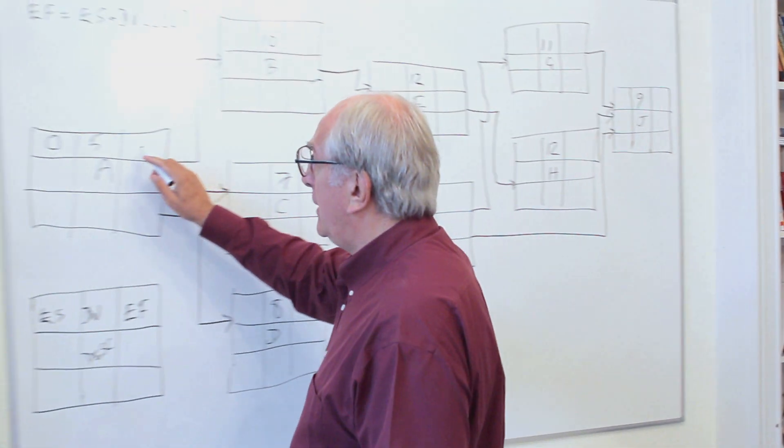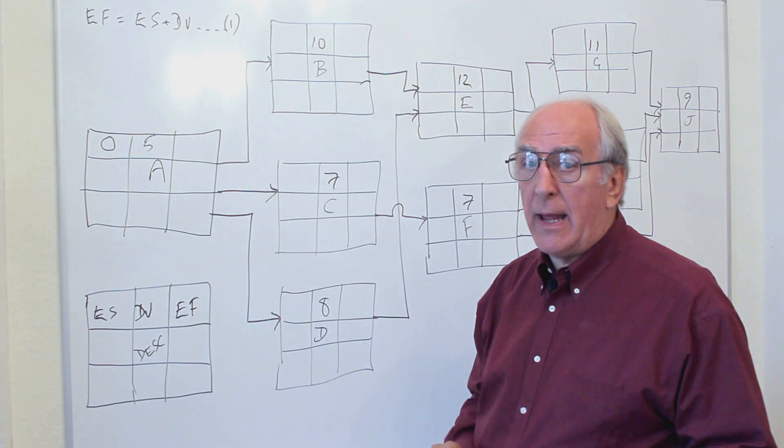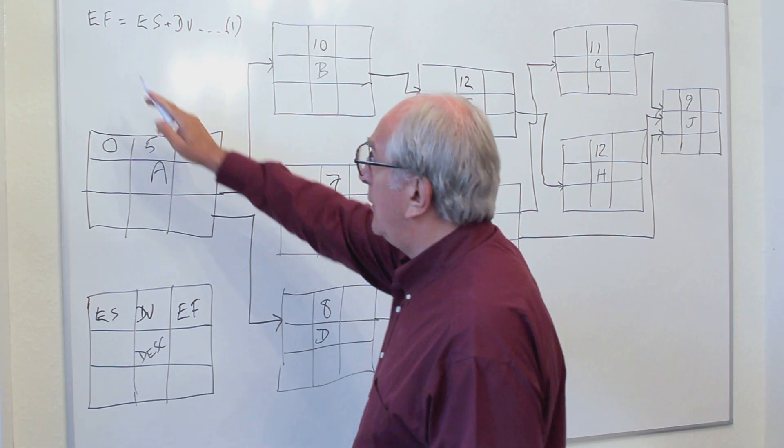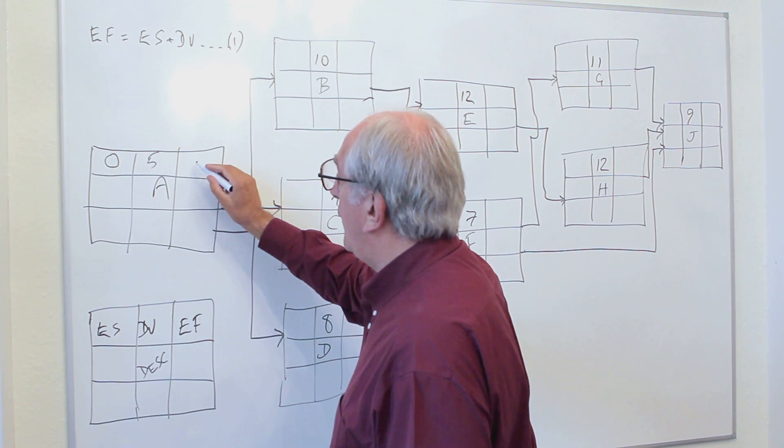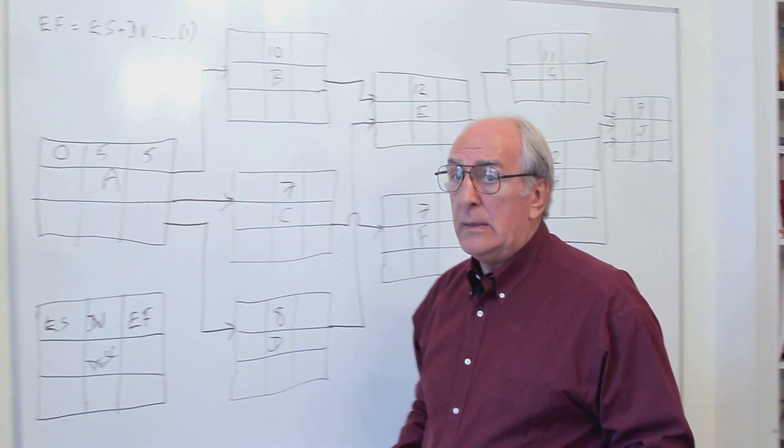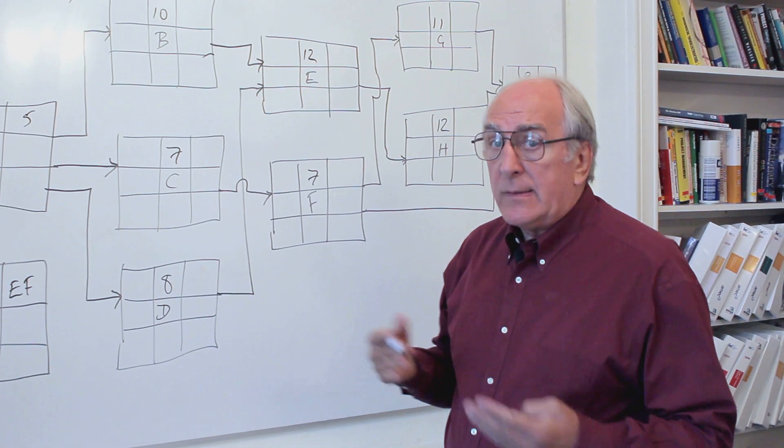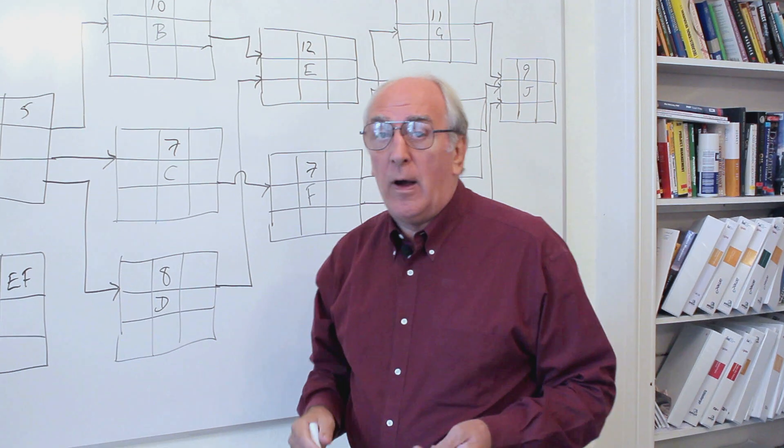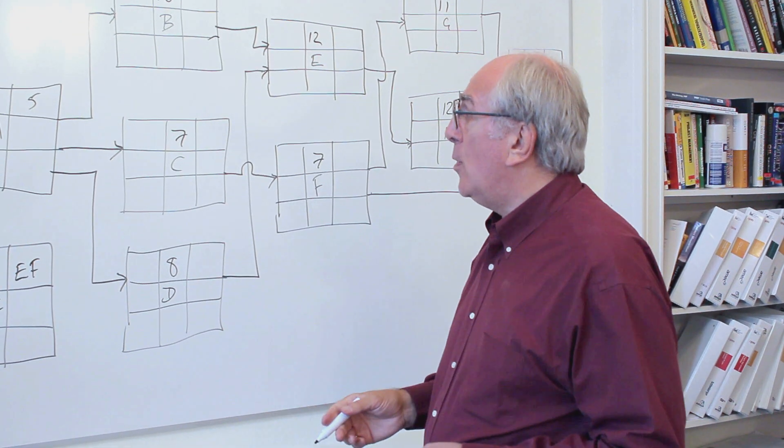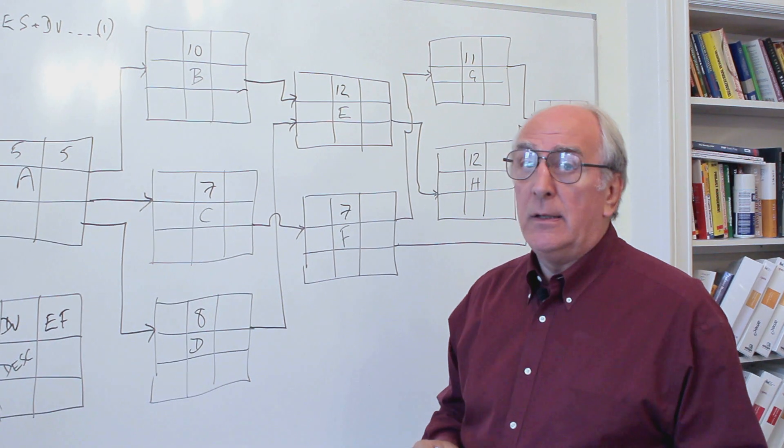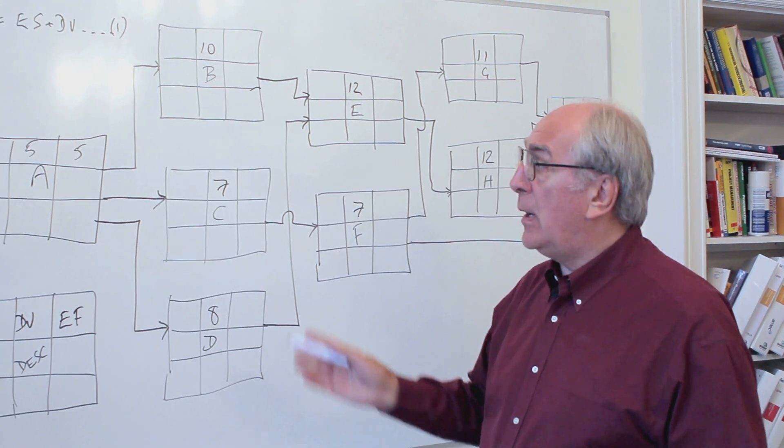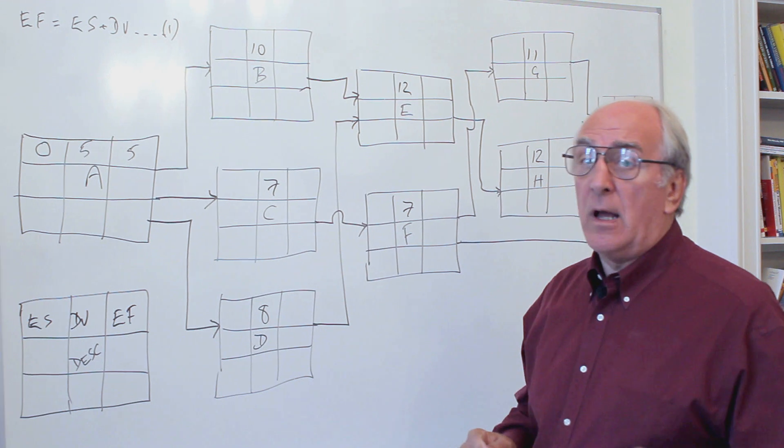The earliest finish of activity A is simply the early start plus the duration. Early start plus the duration: zero plus five is five. Now that's the end of period five.